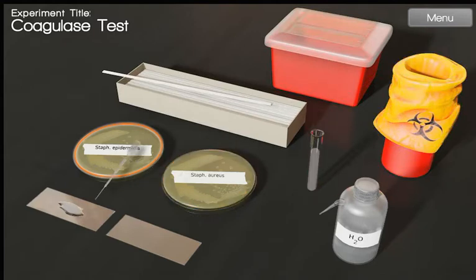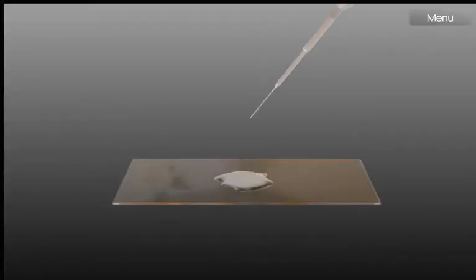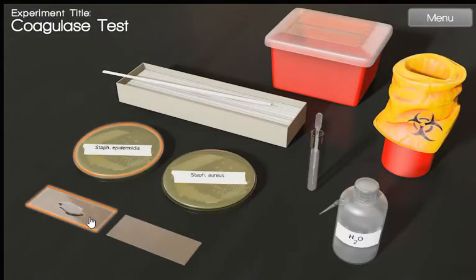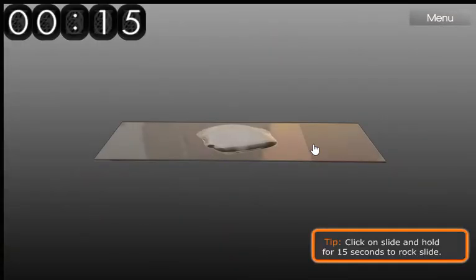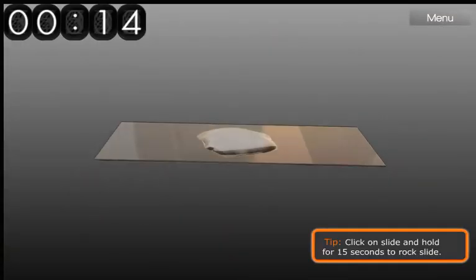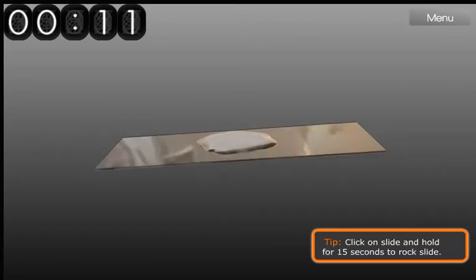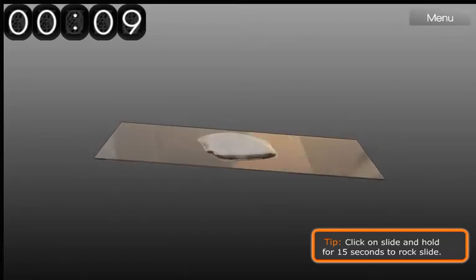We add rabbit plasma. Next we should hold and rock the slide for 15 seconds.